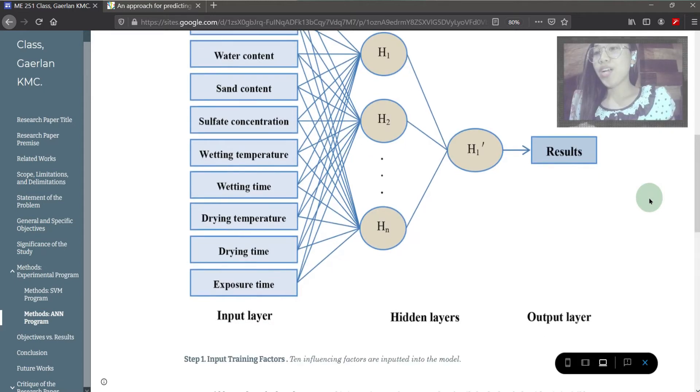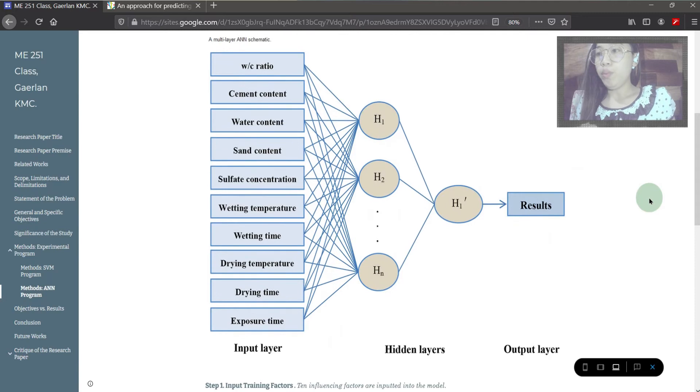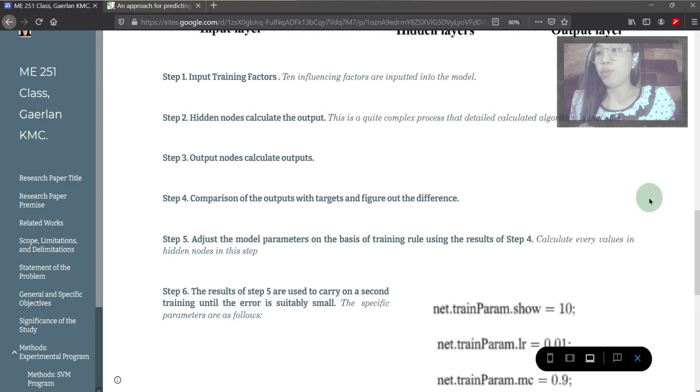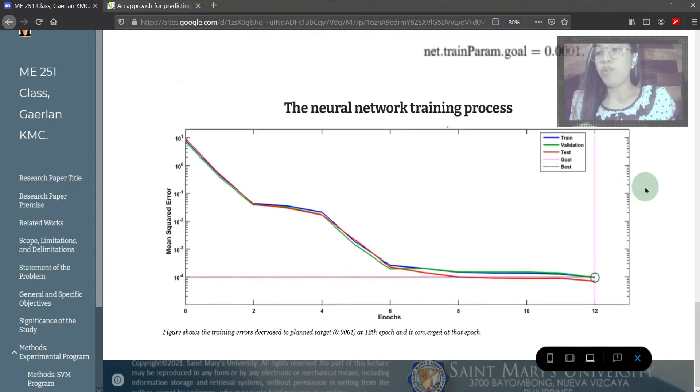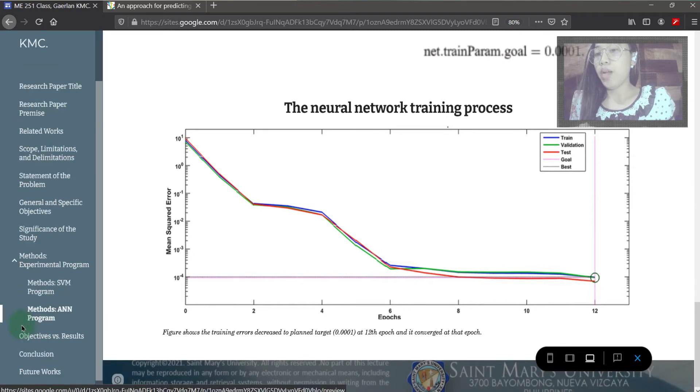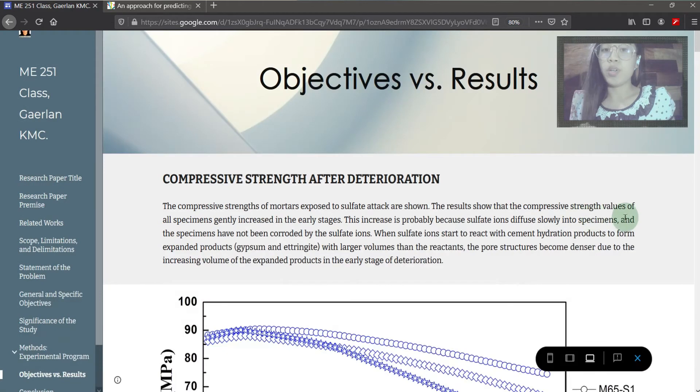Shown here is a multi-layer schematic which begins with inputting training factors followed by calculating the output by hidden nodes and output nodes, then comparing the outputs, figuring out differences, adjusting the model parameters on the basis of training rule until the error is totally small.